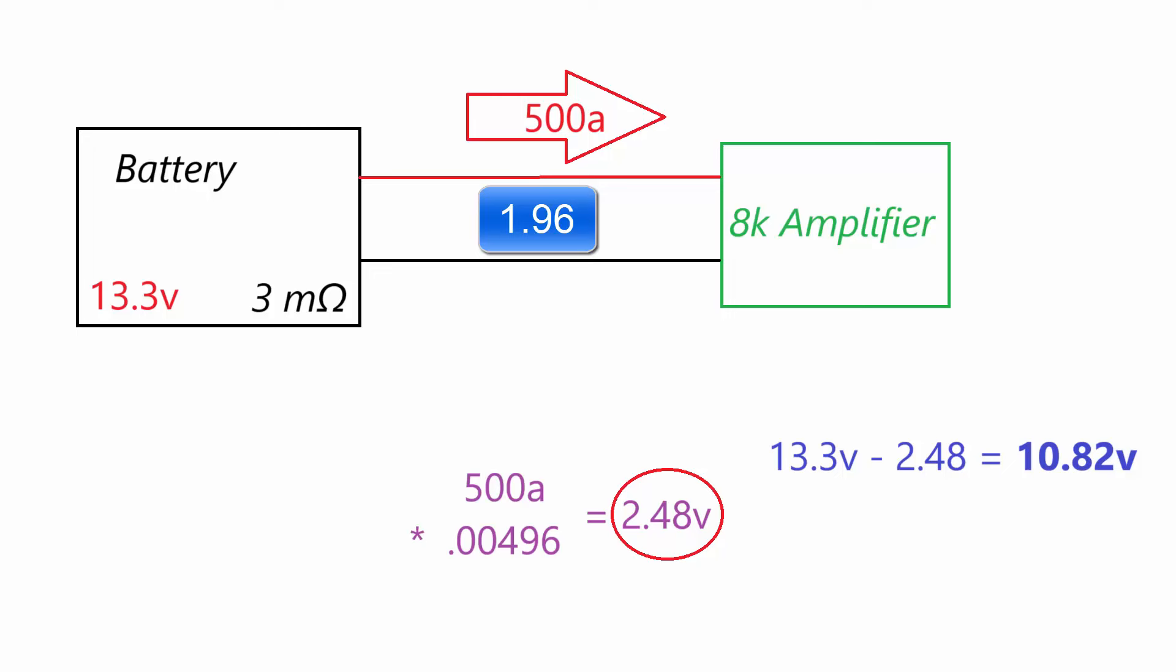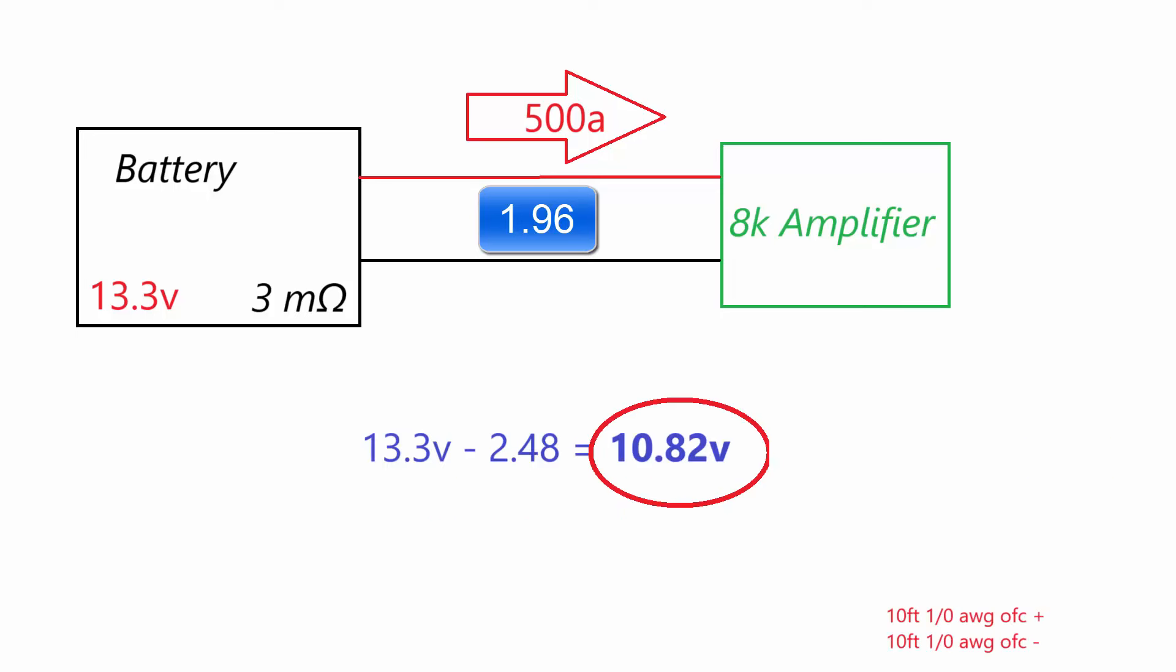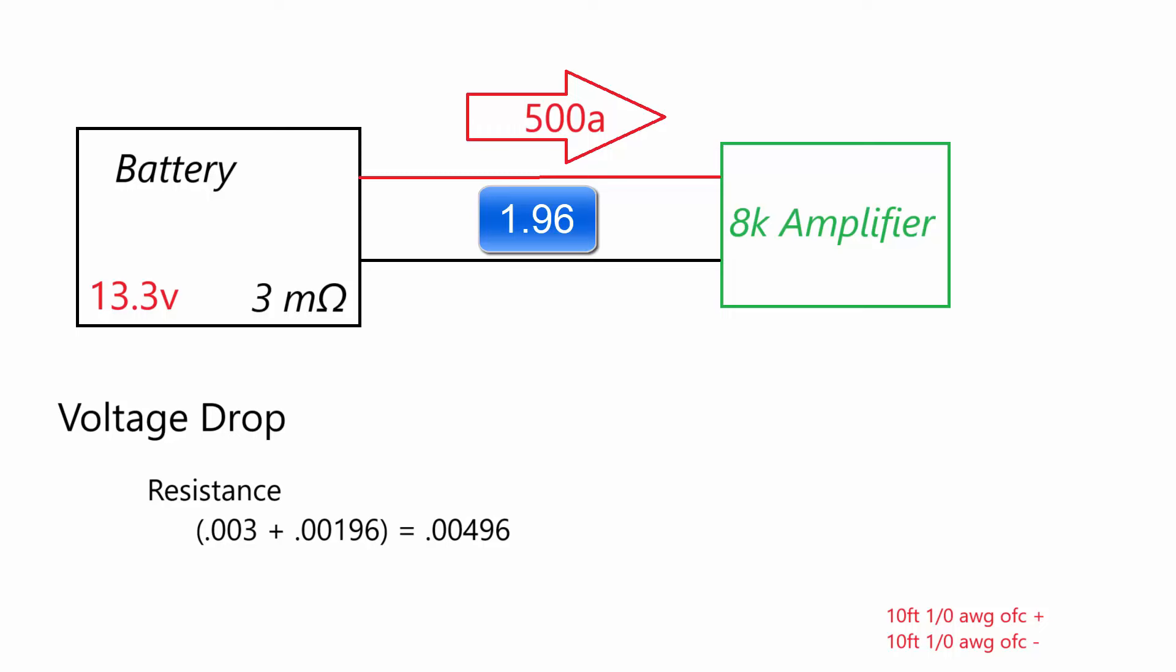Assuming our battery was at 13.3 volts before, that leaves us at 10.8 volts, which is well below what we'd like to see for anything car audio related. So to reiterate, to calculate the voltage drop, we're going to take the total amount of resistance between the battery and the amplifier and multiply it by the total amount of current, in this case 500.